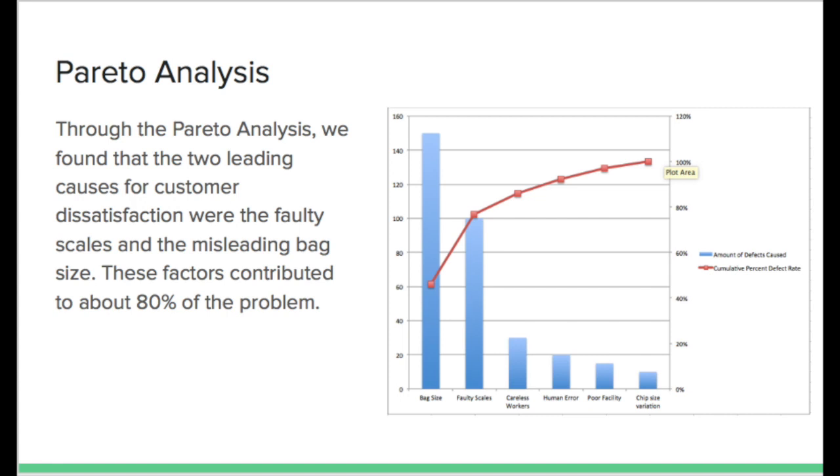So after we looked at all the causes and effects on the cause and effect diagram, we decided to do a Pareto analysis where you see on the graph on the right. Through the Pareto analysis, we found that the two leading causes for customer dissatisfaction were the faulty scales and the misleading bag sizes. These two factors contributed to about 80% of the problem.